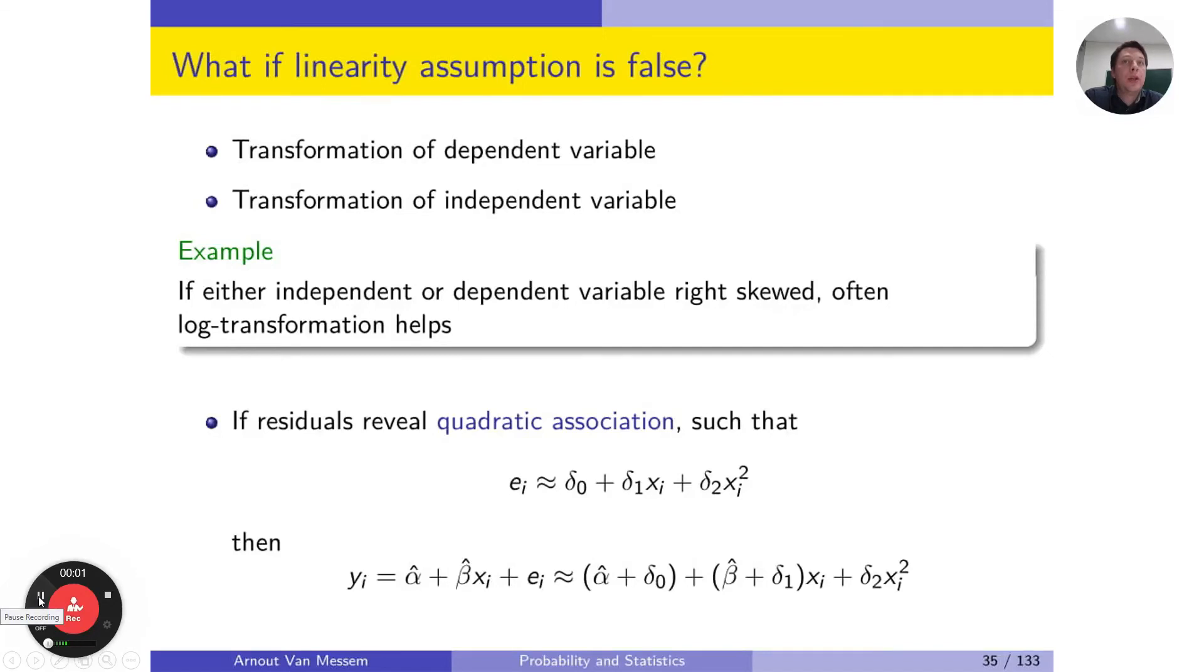So what to do if linearity does not hold? A very easy solution might be to transform either the dependent or the independent variable. Such a transformation is an easy feat to accomplish. However, it complicates the interpretation of the model. If one of the variables is right skewed, it often helps to perform a log transformation.